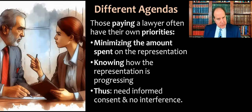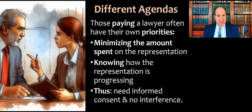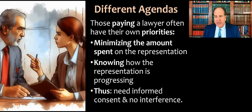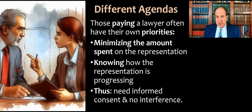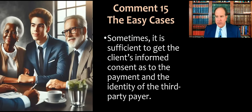There can be different agendas, and that's where the problem is. Those paying the lawyer often have their own priorities — number one is probably minimizing the cost of the representation. They may say they don't want to hire experts, jury consultants, or do e-discovery because that can be very expensive. They also often want to be kept informed about how the representation is progressing. Because of these two main concerns, the client has to give informed consent, authorizing the disclosures and the decisions about expenditures. And even with the client's consent, there can't be interference — a third party can't be on the side telling the lawyer what to do.